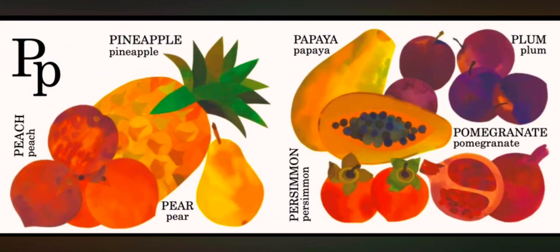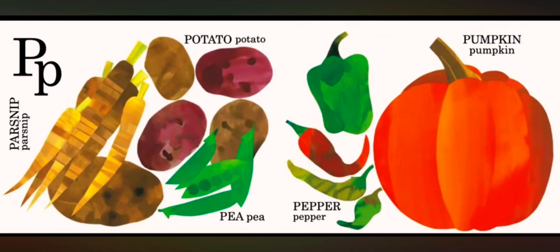P is for peach. P is for pineapple. P is for pear. P is for papaya. P is for persimmon. P is for plum. P is for pomegranate.